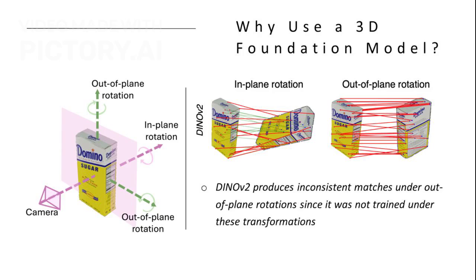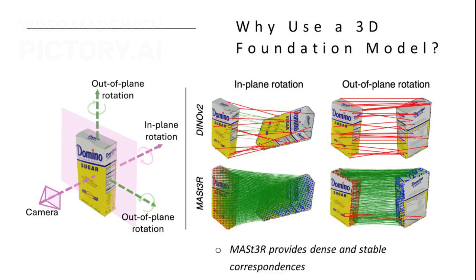Existing 2D foundation models like Dino perform well on standard image matching tasks but struggle under large out-of-plane rotations. This is because their training lacks 3D transformations, leading to inconsistent matches when the viewpoint changes significantly. In contrast, 3D foundation models like MASTER are trained with 3D transformations, and they produce dense and stable correspondences even under significant pose changes. This makes them ideal for tasks like 6D pose estimation, where viewpoint variation is critical.